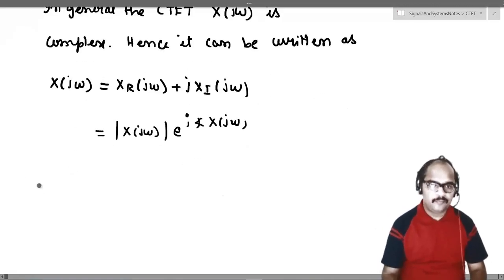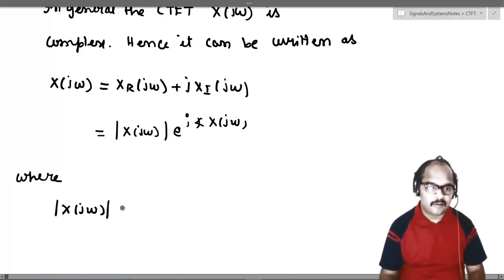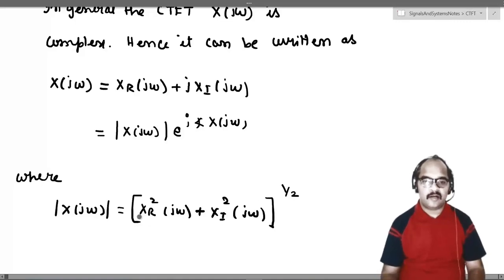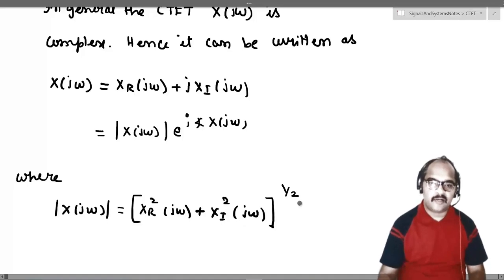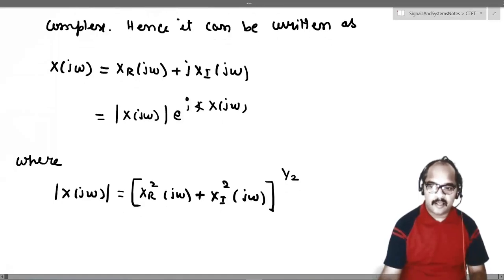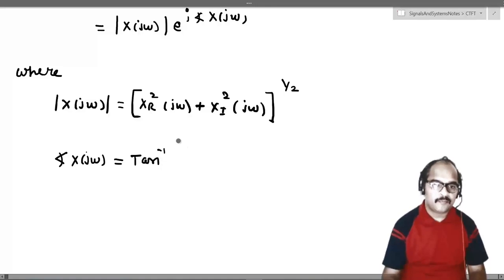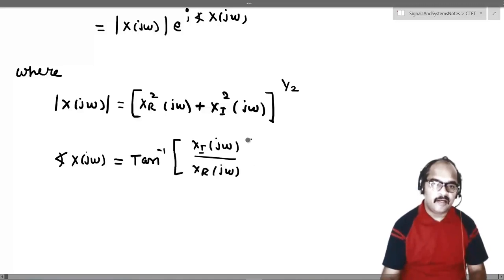These two forms are related as follows: the modulus |X(jω)|, which we call the magnitude, equals the square root of the real part squared plus the imaginary part squared. That is, |X(jω)| = [X_R(jω)² + X_I(jω)²]^(1/2). And the angle ∠X(jω) equals tan inverse of the imaginary part divided by the real part.